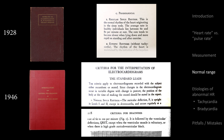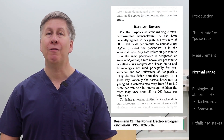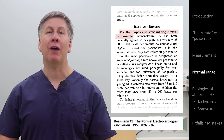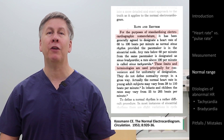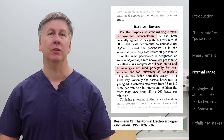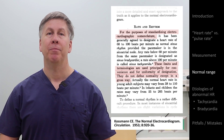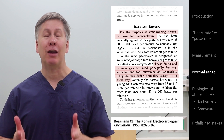This was still long before population studies on normal heart rates. So why was this range chosen and labeled 'normal'? Well, as put by Charles Kosman, an early member of that group, it was for, quote, the purposes of standardizing electrocardiographic nomenclature. These limits and terminologies are used principally for convenience and uniformity of designation. They do not define normality except in a gross way. In other words, it was an educated guess made for convenience.